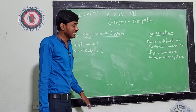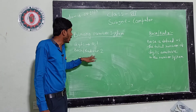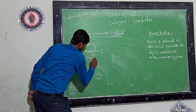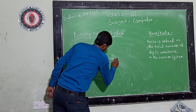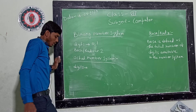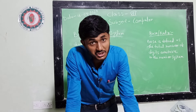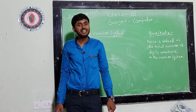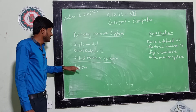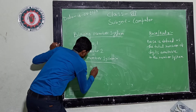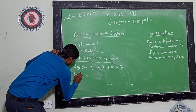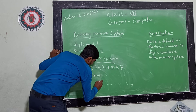Binary number system contains only 2 digits, that is why the base or radix of this number system is 2. The next one is octal number system. Octal number system contains total 8 digits, that is 0, 1, 2, 3, 4, 5, 6, 7. So the base or radix of octal number system is 8.